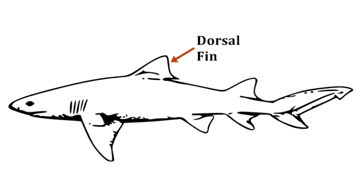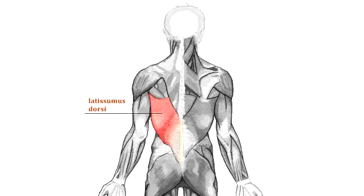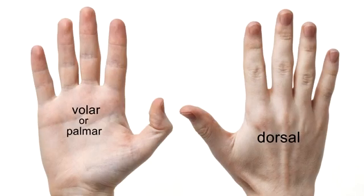We think of the fin on the top of a shark as the dorsal fin. In humans, the word dorsal is part of the name of the muscle latissimus dorsi, a muscle of the back. The side of the hand opposite the palm, or the volar aspect, is the dorsal aspect of the hand.